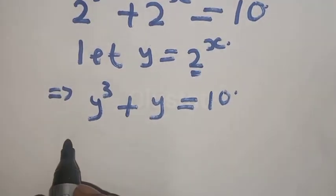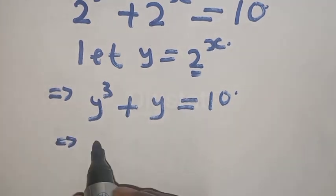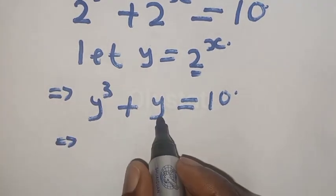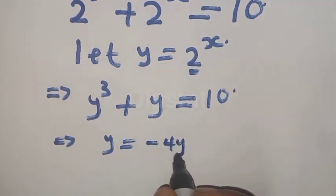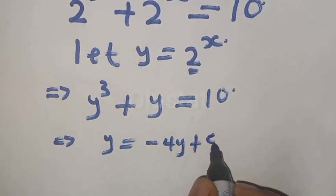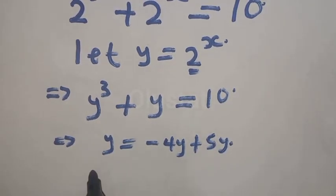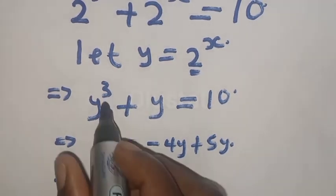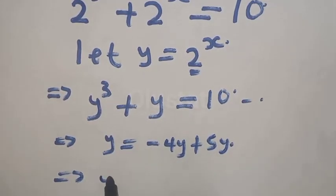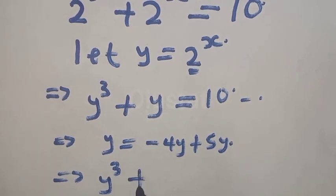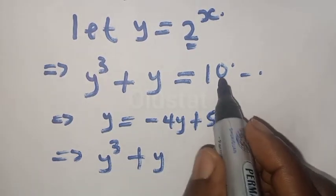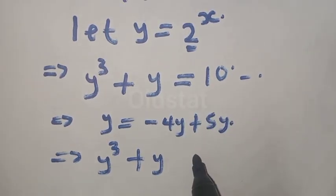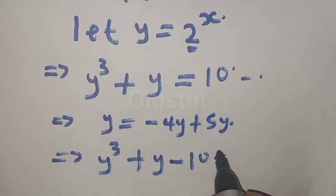This can also be expressed as: y raised to power 3 plus y, if the 10 comes to the other side it becomes minus 10, so y raised to power 3 plus y minus 10 is equal to 0.